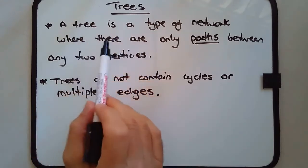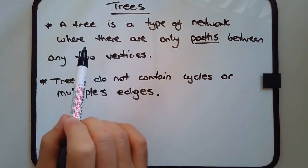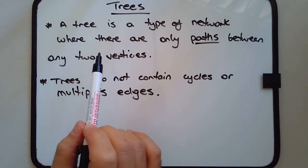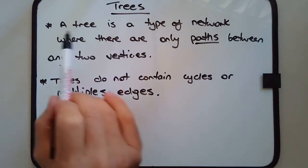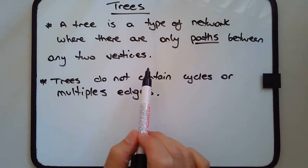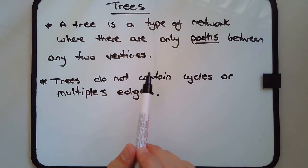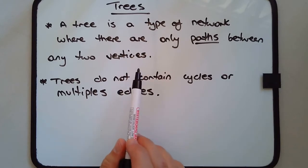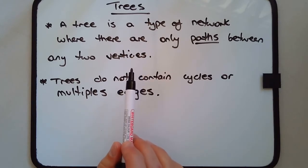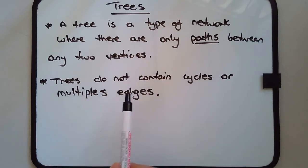So first of all, what is a tree? Not the biological kind — though there is a relationship between a tree in networks and a biological tree, which is why it's called a tree. A tree is a type of network where there are only paths between any two vertices. A path is a special type of walk, meaning there's only one way to go from one vertex to another. Basically, trees do not contain cycles or multiple edges.